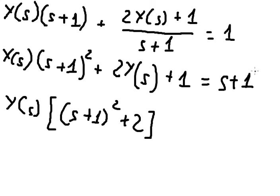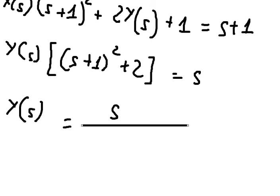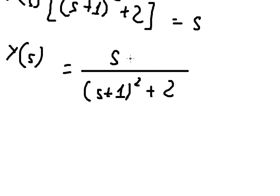The 1 and 1 cancel. So we divide both sides by (s+1). For this one, I need to add a bound number 1, and then we need to minus a bound number 1, because we need to do the inverse Laplace transformation.